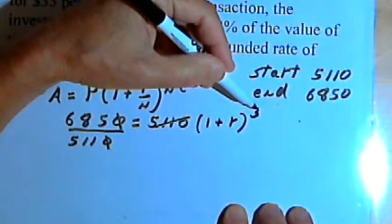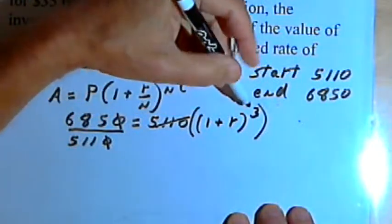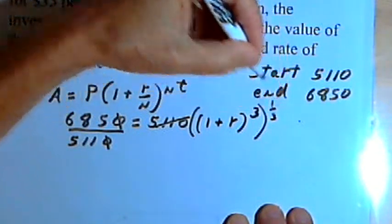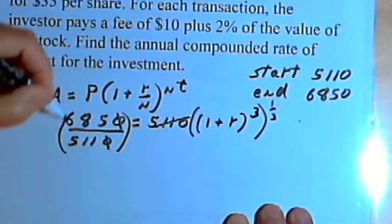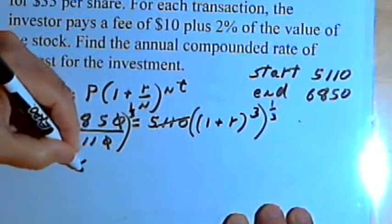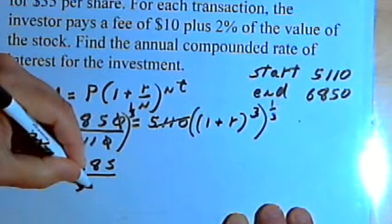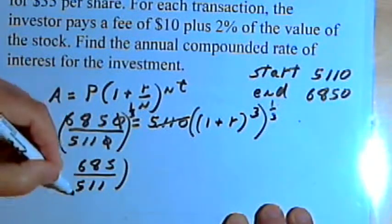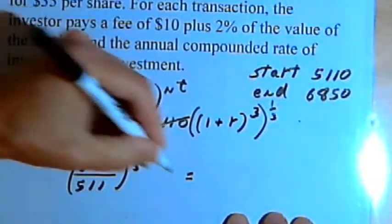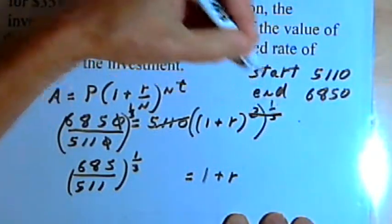If I want to get rid of that third power, what I'll do is raise this entire expression to the reciprocal of that power. So the reciprocal of 3 is 1 over 3. I'm going to have to do the same thing to the other side of the equation. So I've got (685 over 511) raised to the one-third power, and that equals (1 plus r).